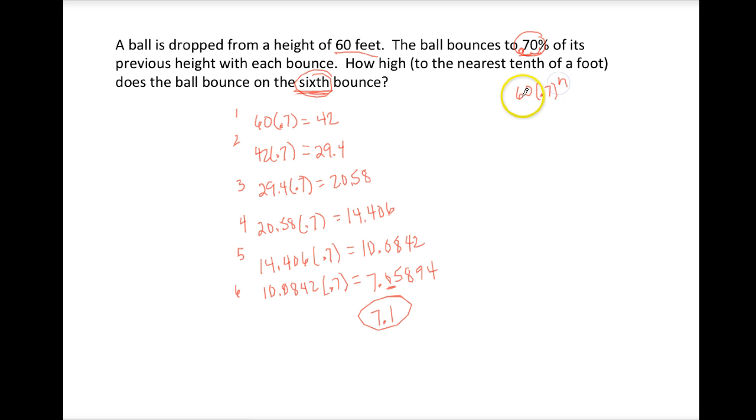So your formula would be 60 times .7 to the n. For the sixth bounce, you would calculate 60 times .7 to the sixth power. Do .7 to the sixth power, multiply by 60, and you will still get the exact same answer.